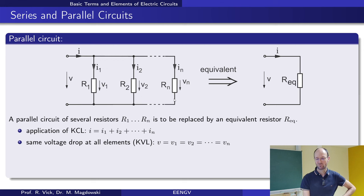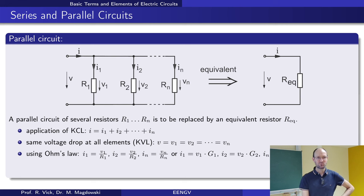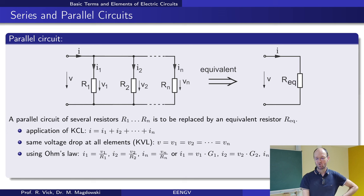We again try to replace this parallel circuit with some equivalent resistance. Using Ohm's law, current equals voltage divided by resistance for each branch. However, always dealing with fractions is not very convenient, so it's nicer to write it using conductance instead — current equals voltage times conductance — for each branch.